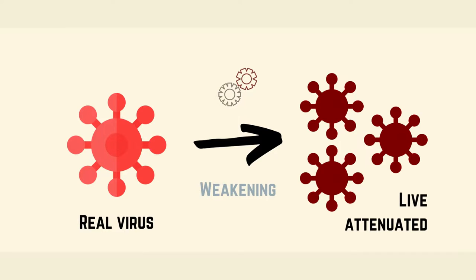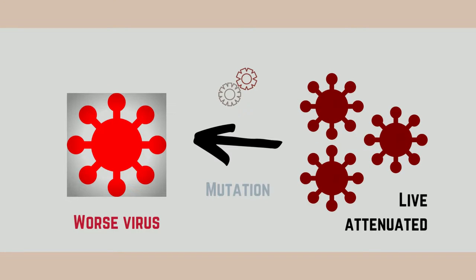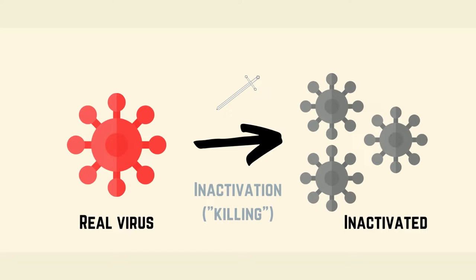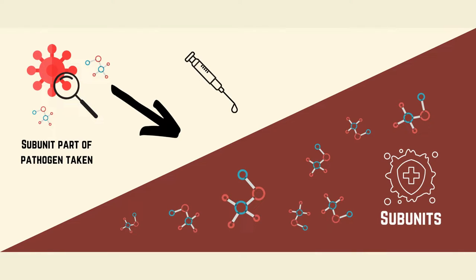Live attenuated vaccines contain active and live viruses but which are weakened. One of the main disadvantages of this vaccine is that it mutates to a virulent form on rare occasions and causes disease. Inactivated vaccines are ones that have germs that have been killed or inactivated with chemicals, heat, or radiation. Toxoid vaccines are made from inactivated toxic compounds rather than introducing an inactivated or attenuated microorganism to the immune system, which would constitute a whole-agent vaccine.